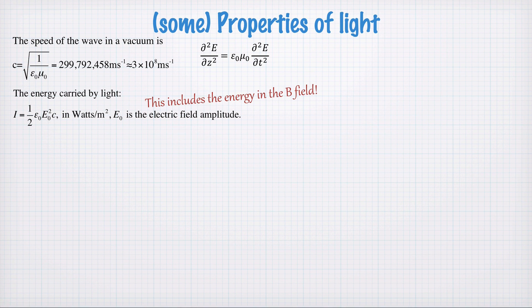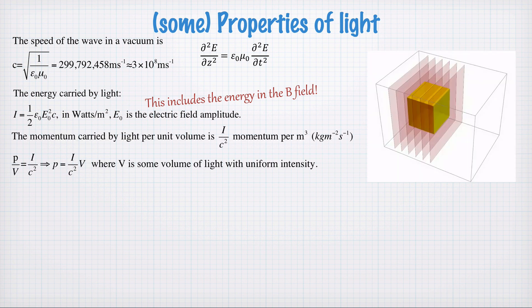An additional property of light that I want to introduce is the momentum that light can carry. So the momentum carried by light per unit volume is the intensity I divided by c squared. So this is momentum per meter cubed, so kilograms, meters to the minus two, seconds to the minus one.